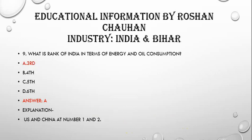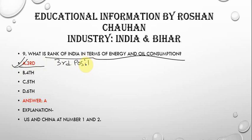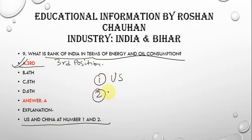The next question is: what is India's rank in terms of energy and oil consumption? The correct answer is 3rd position. The US and China are at number 1 and number 2 respectively, and India is at number 3 in the consumption of energy and oil.